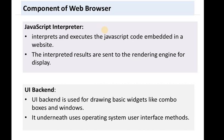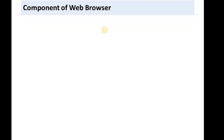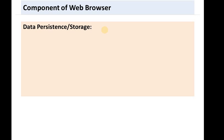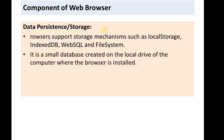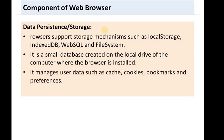After that, UI backend. The UI backend is not web-browser-dependent — it is generally operating system dependent. Then there is data persistence and storage, which supports storage mechanisms like local storage, indexed database, web SQL, and file system. It is like a small database created on a local drive of your computer where the browser is installed, and it manages data such as cache, cookies, bookmarks, and preferences.